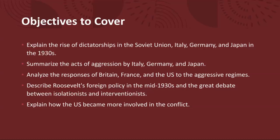Finally, we're going to take a close look at how the US became more involved in the conflict. Despite a desire to avoid involvement in foreign wars, the US gradually shifted towards a policy of supporting the Allies, especially after the outbreak of World War II in Europe in 1939. Measures such as the Lend-Lease Act provided crucial aid to Britain and other allied nations, while the attack on Pearl Harbor by Japan in 1941 ultimately propelled the US into full-scale participation in the conflict.